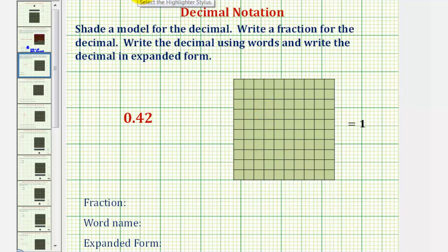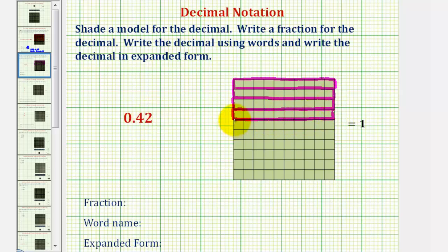If we think of this in terms of longs and bits, 42 hundredths would be four longs. This would be 40 hundredths, but because we want 42 hundredths, we'd also include two bits. Now let's go ahead and shade this.